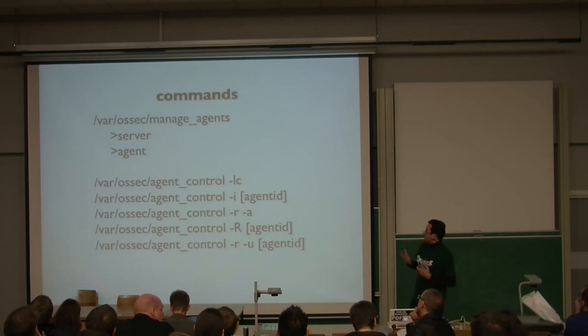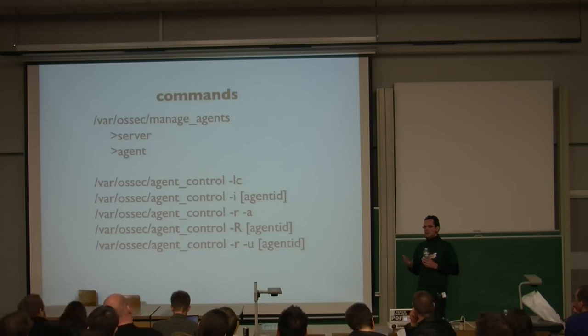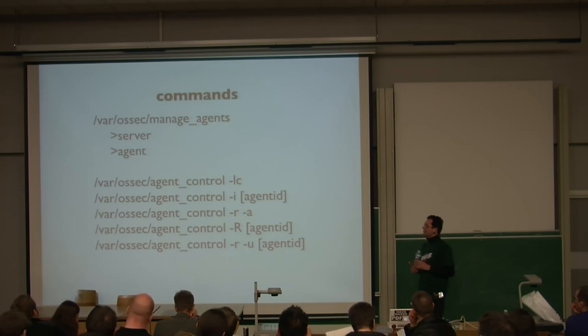On the command line, you have managed agents, and there's two versions on it. If you compile it in the server version, you're going to be able to create central keys, and you're going to have a central database of keys. Then on the agent side, the basic functionality is there to import the key, and that's it.